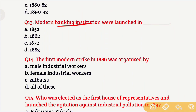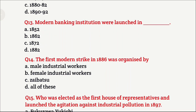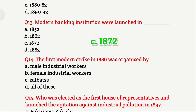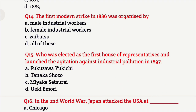Question 13: Modern banking institutions were launched in Japan in — Option A is 1852, Option B is 1862, Option C is 1872, and Option D is 1882. The right answer is Option C, which is 1872.